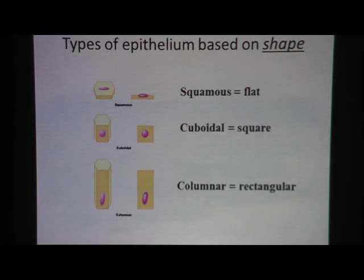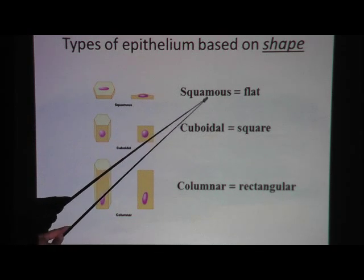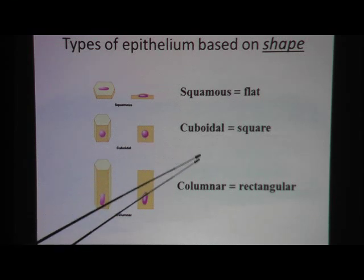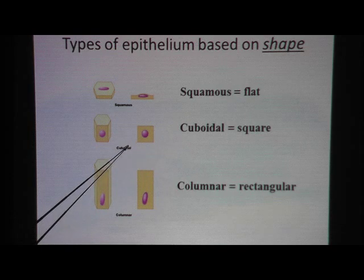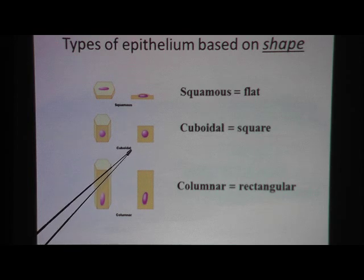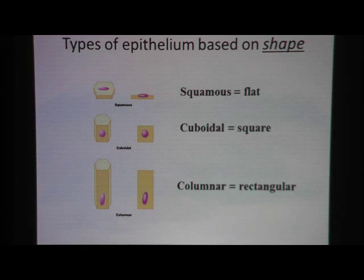Here's a review of the different shapes possible with epithelium. If the cell is squished, it's called squamous — 'sq' for squished, 'sq' for squamous. Cuboidal cells have a height about the same size as the width, so it's a cube or square shape. And lastly, if the shape is tall and skinny, it will be a columnar epithelium.